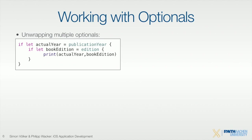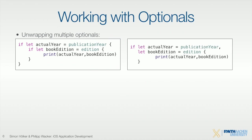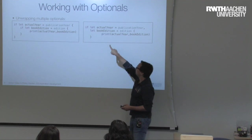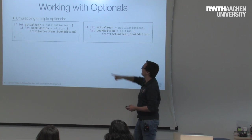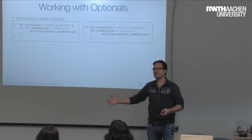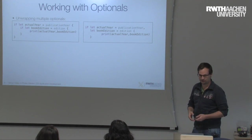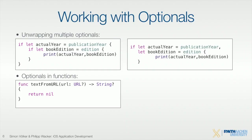You can also unwrap multiple optionals at once. Instead of nesting many if statements, you can separate multiple if-let bindings by a comma. The system will check the first one, and if true, check the second — it's a lazy evaluation. This way you can unpack many conditions at once without having many nested if statements.